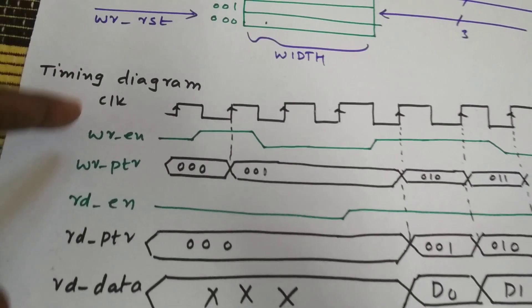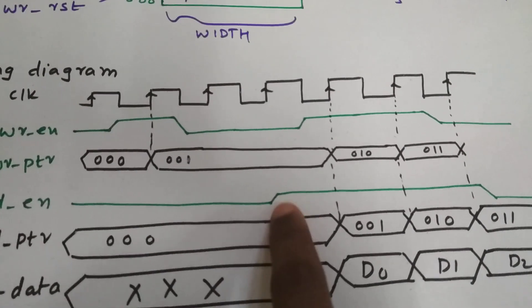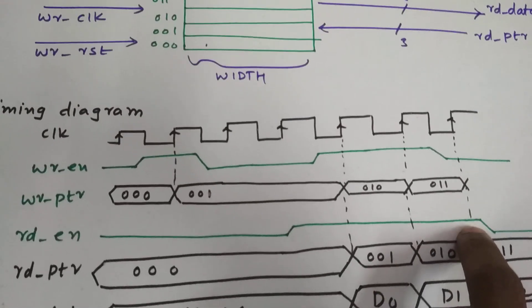After the write operation has been done, if you want to read the data, we'll give read enable high. So read enable is high for three clock cycles at this positive edge, this positive edge, and this positive edge.